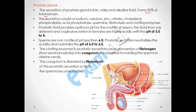The secretion from the prostate gland is a thin, milky, and alkaline fluid. Its constituents include sodium, calcium, zinc, citrate, cholesterol, phospholipid, acid phosphatase, spermine, fibrinolysin, and clotting enzyme. The prostate fluid provides the optimum pH for sperm motility. The fluid from the vas deferens and vaginal secretion in the female is highly acidic with a pH of 3.5 to 4, at which sperm is non-motile.